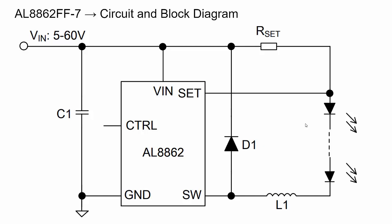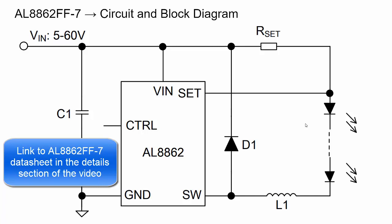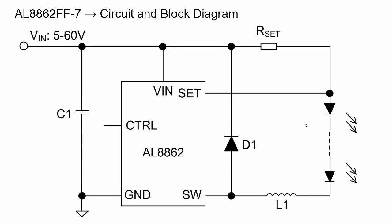Here's a typical application diagram of the AL8862 IC from the data sheet. The circuit can input up to 60 volts and as low as 5 volts. The power source connects through RSET and then to the string of LEDs. We have inductor L1, diode D1, the IC itself, and capacitor C1 on the input. The LED panel I just showed connects into this part of the circuit — we could have up to two panels, which would be 55 volts.